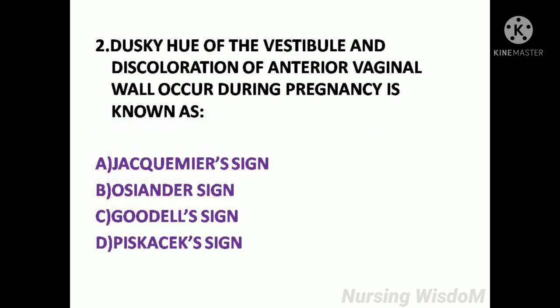Next question: Dusky hue of the vestibule and discoloration of the anterior vaginal wall occurring during pregnancy is known as — Option A: Jacquemier's sign. Option B: Osiander sign. Option C: Goodell's sign. Option D: Piskacek's sign.